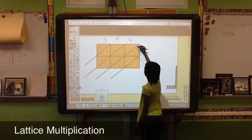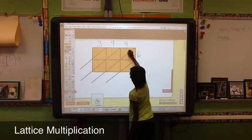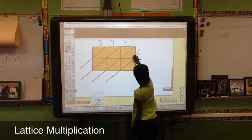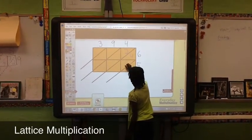So first, you do 4 times 6, which is 24. Then you do 4 times 5 equals 20.